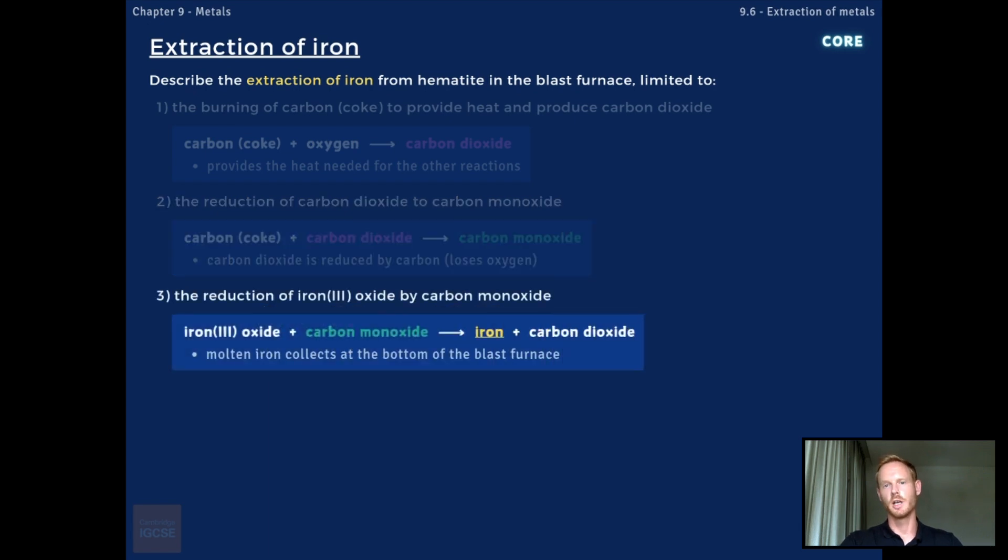Stage 3 is the reduction of iron-3 oxide by carbon monoxide. Iron-3 oxide or hematite reacts with the carbon monoxide from the previous reaction to form molten iron metal and carbon dioxide gas.